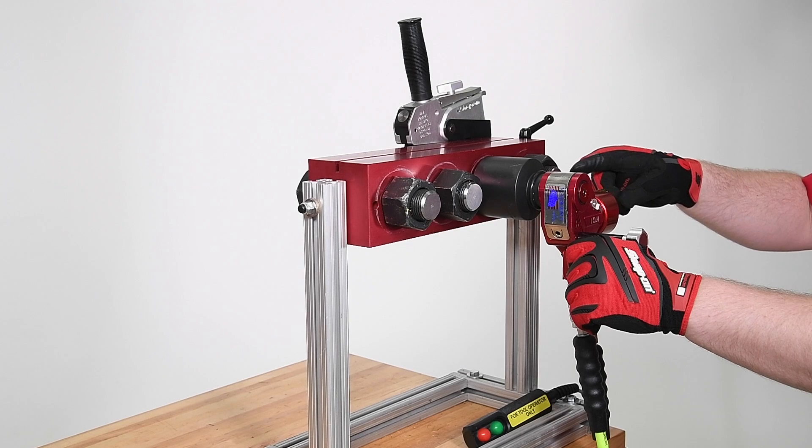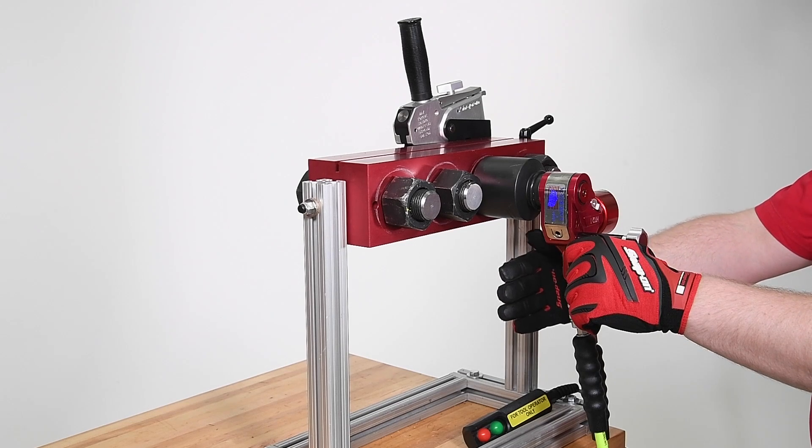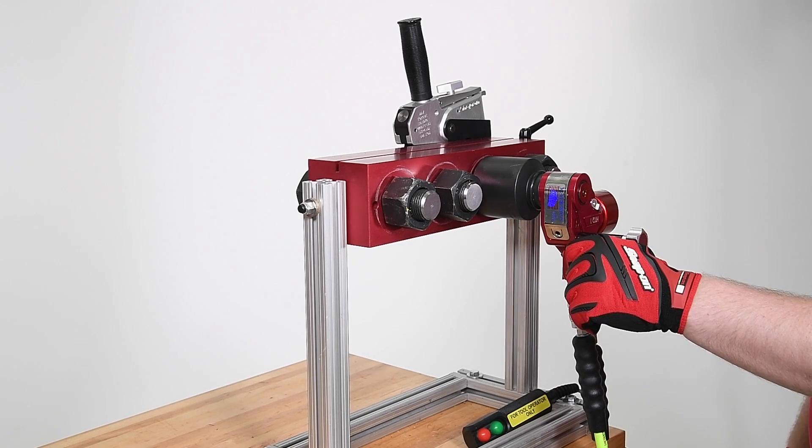The reaction arm is a pinch point, so be sure to keep hands and fingers away from the area by using the handle to steady the wrench. The reaction arm should be positioned so that the wrench will stay in place during operation. Reaction forces should be as close as possible to the same plane as the torquing force. This will keep the wrench stable.